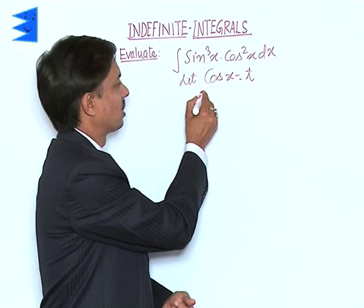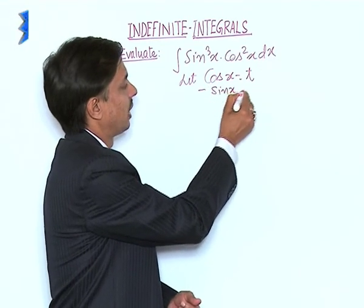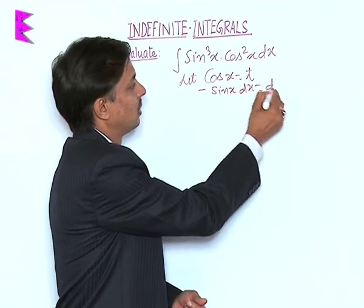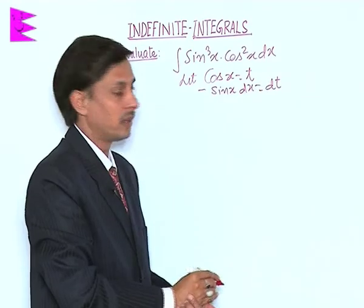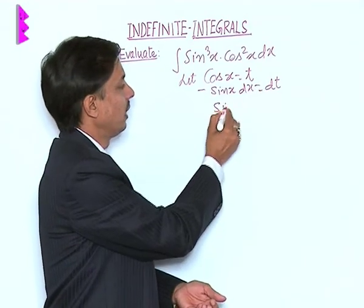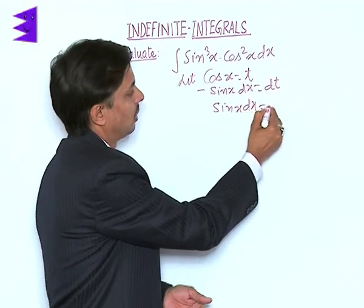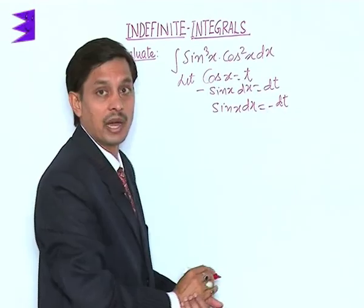Derivative of cos x is minus sin x dx equals dt, or we can say sin x dx is equal to minus dt.